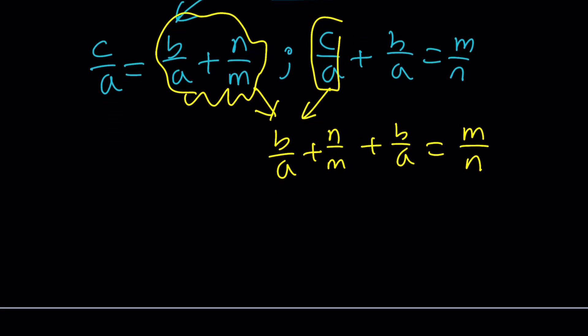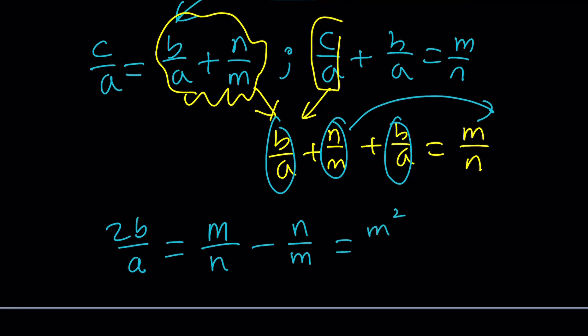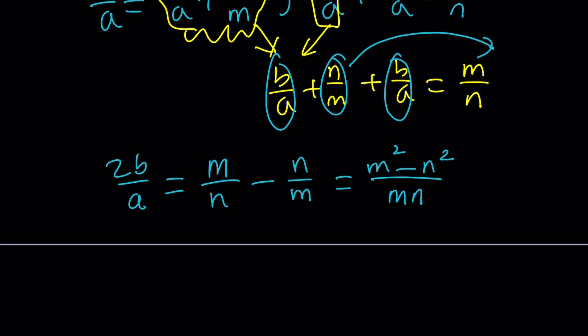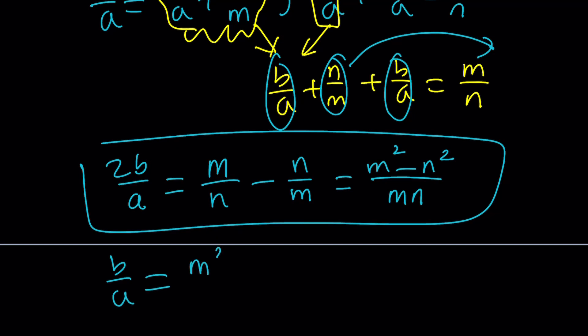From here, if we do that, we're going to get b over a plus n over m plus b over a equals m over n. So, add these two up. You're going to get 2b, or not 2b, sorry, I had to say that, over a equals, I'm going to subtract this guy over here so I can isolate 2b over a, m over n minus n over m. Make a common denominator. You're going to get m squared minus n squared divided by mn. Or mn. From here, since 2b over a is equal to that, we can divide by two. This is going to give us b over a as m squared minus n squared divided by 2mn.